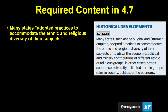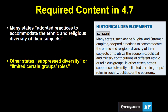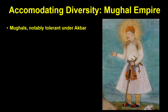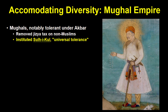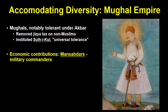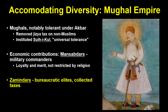Now let's move on to Topic 4.7: changing social hierarchies. This first section is about how many states — particularly the Mughals and the Ottomans — made use of the diversity of their empires, while other states attempted to suppress diversity. The Mughals were the most tolerant, especially because of the policies of Akbar, who famously removed the jizya tax on non-Muslims and instituted the policy of Sulh-i-kul — universal tolerance. Mansabdars were military commanders assigned to territories; religion was not a limiting factor for this role — it was based on loyalty and merit. Similarly, the Zamindars, bureaucratic elites who collected taxes, could be Muslim, Hindu, or other.